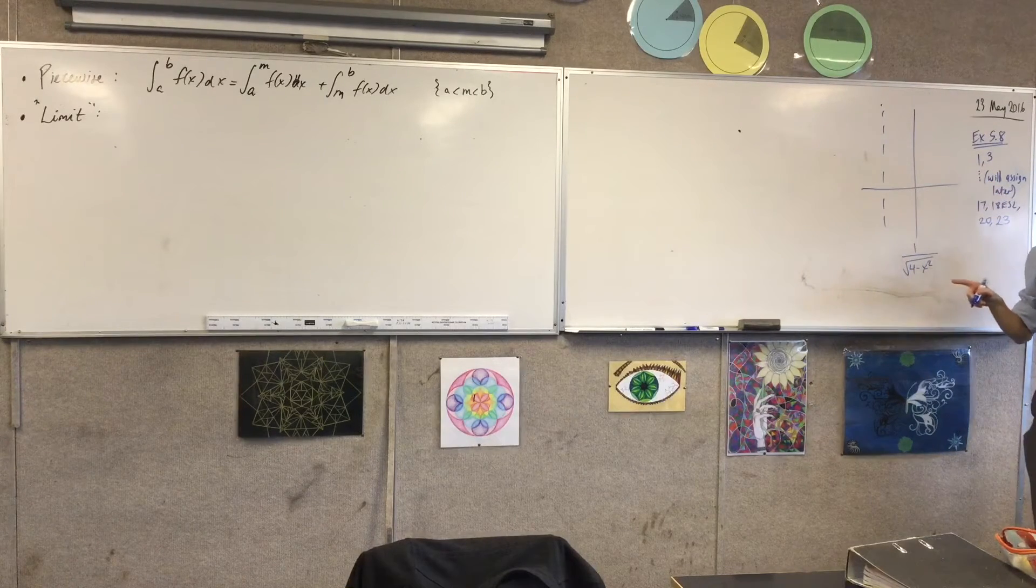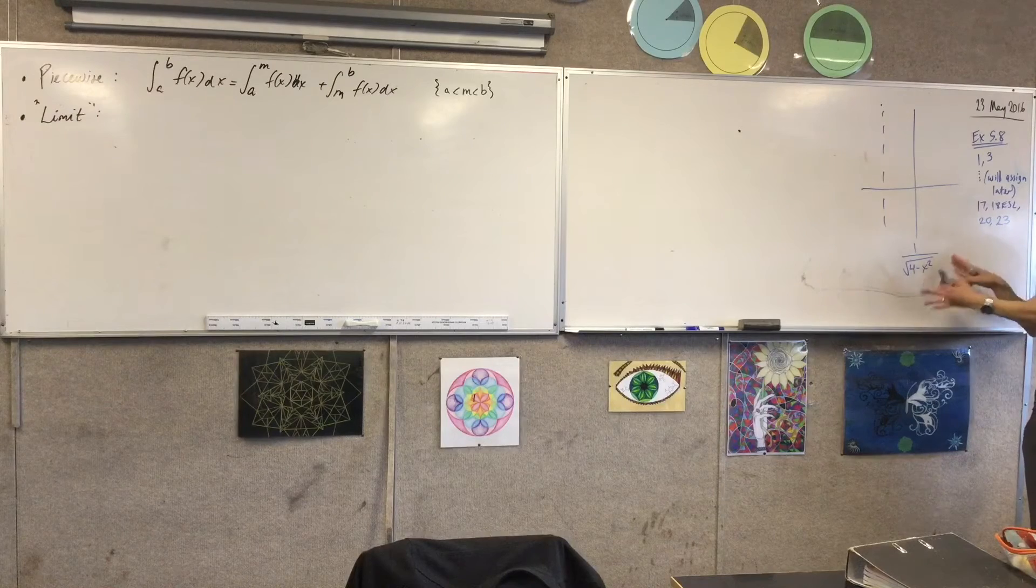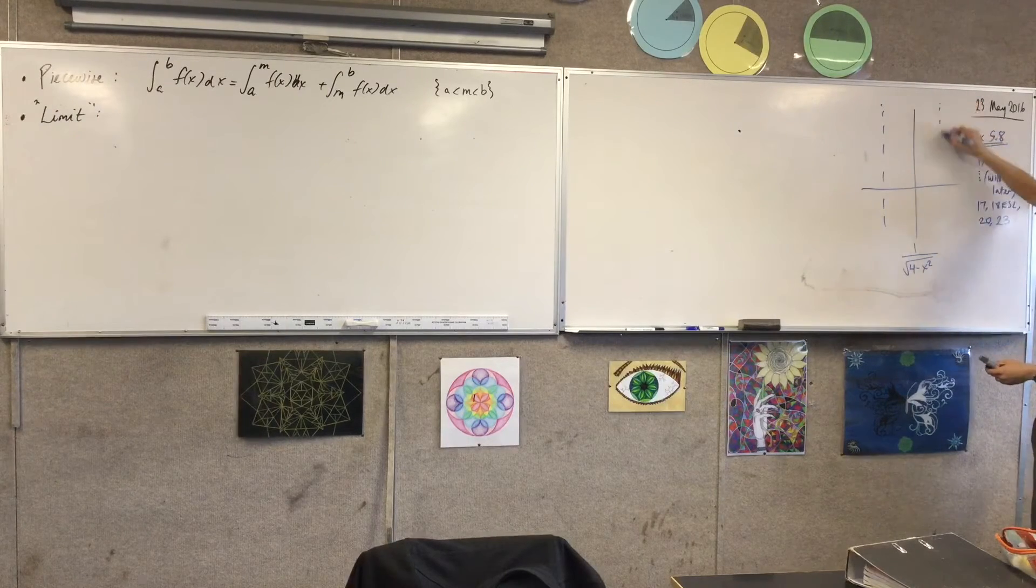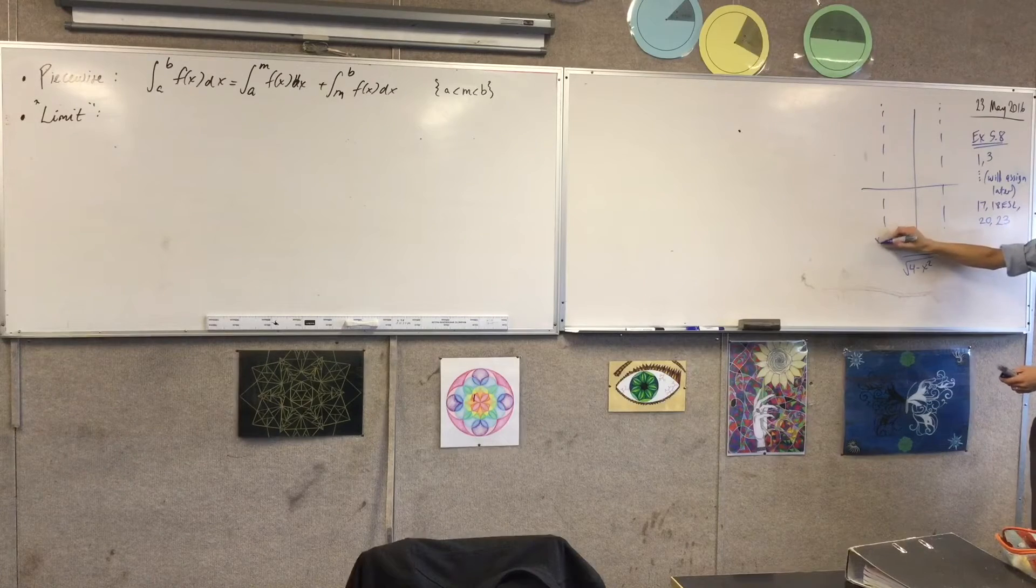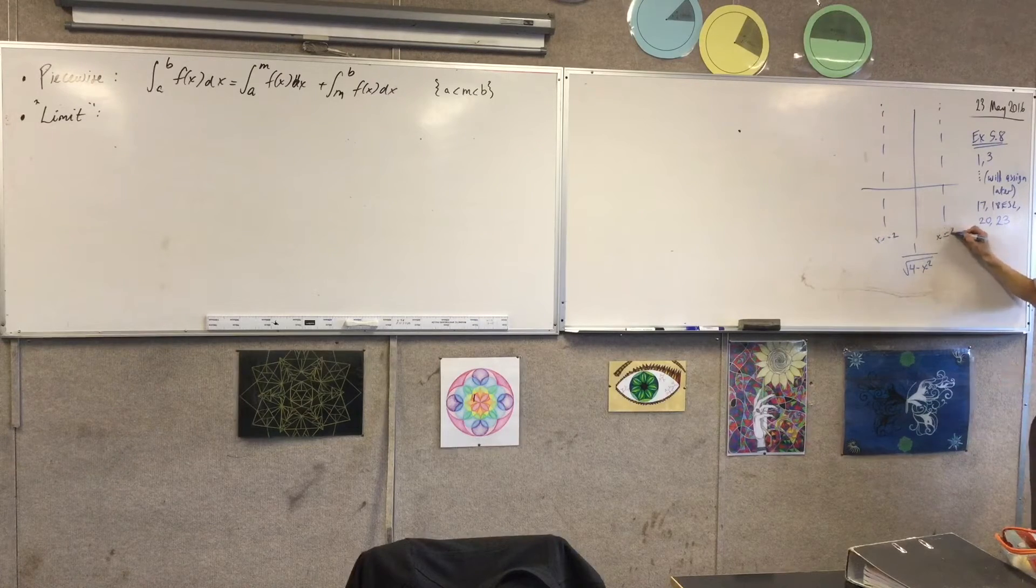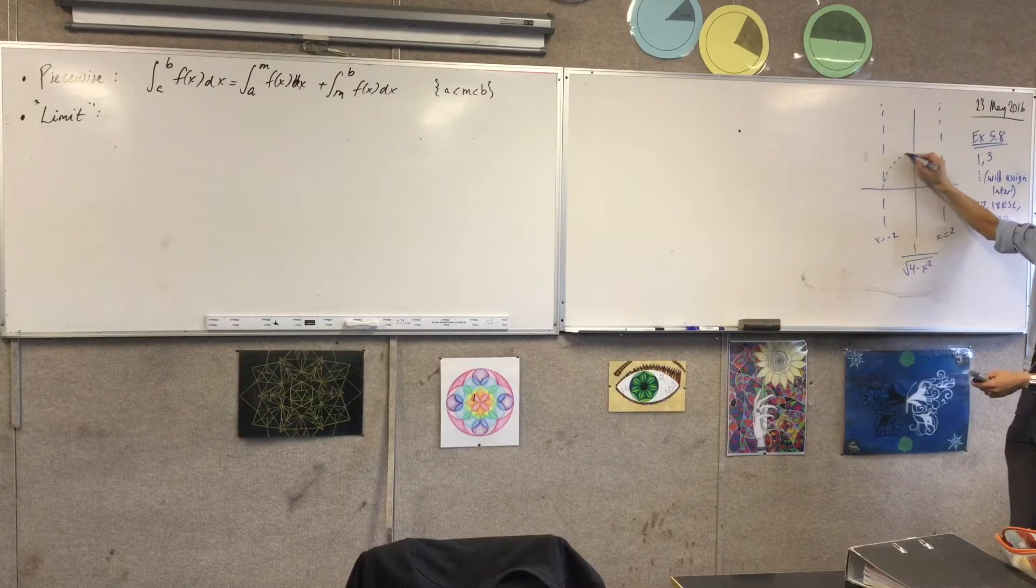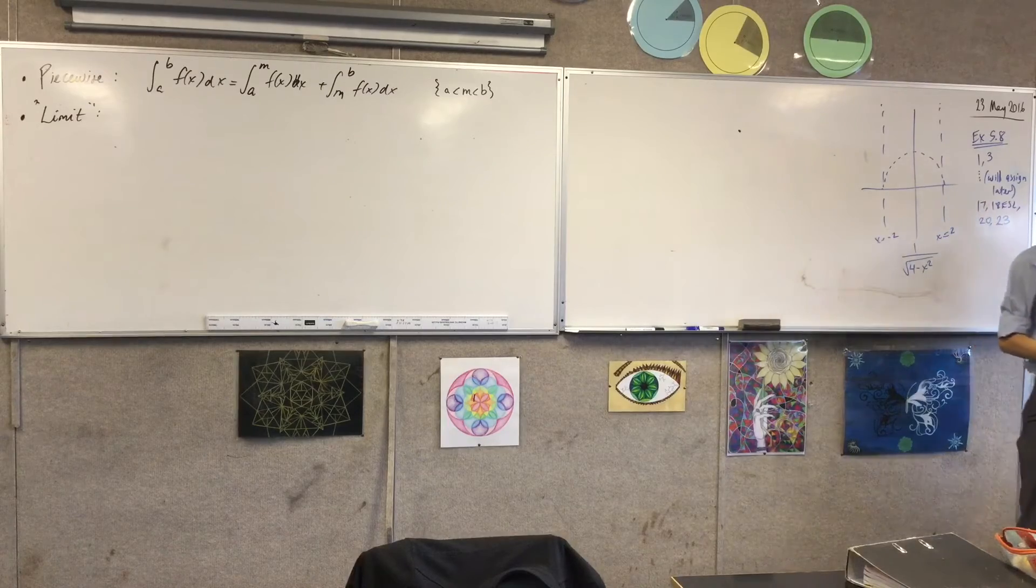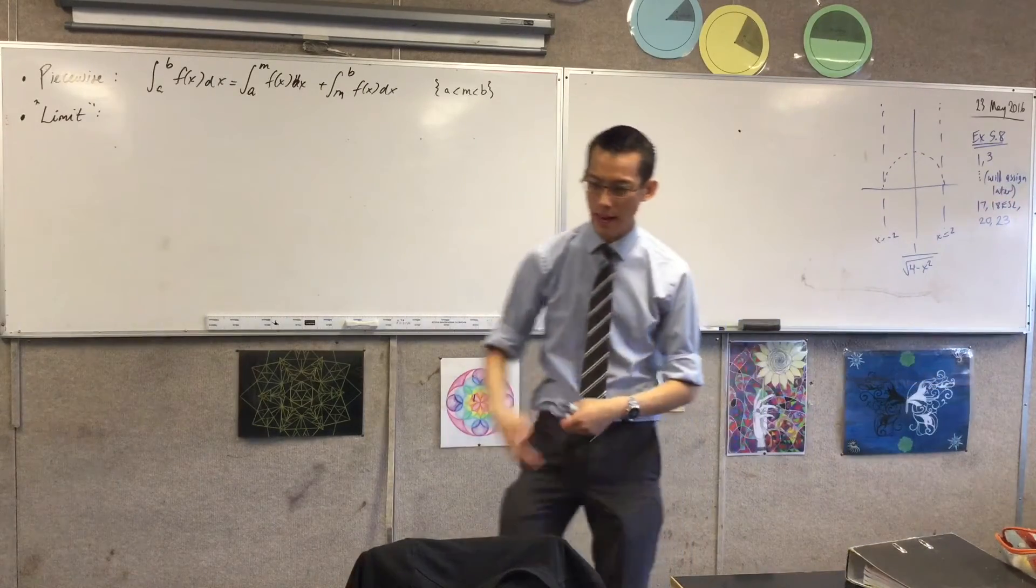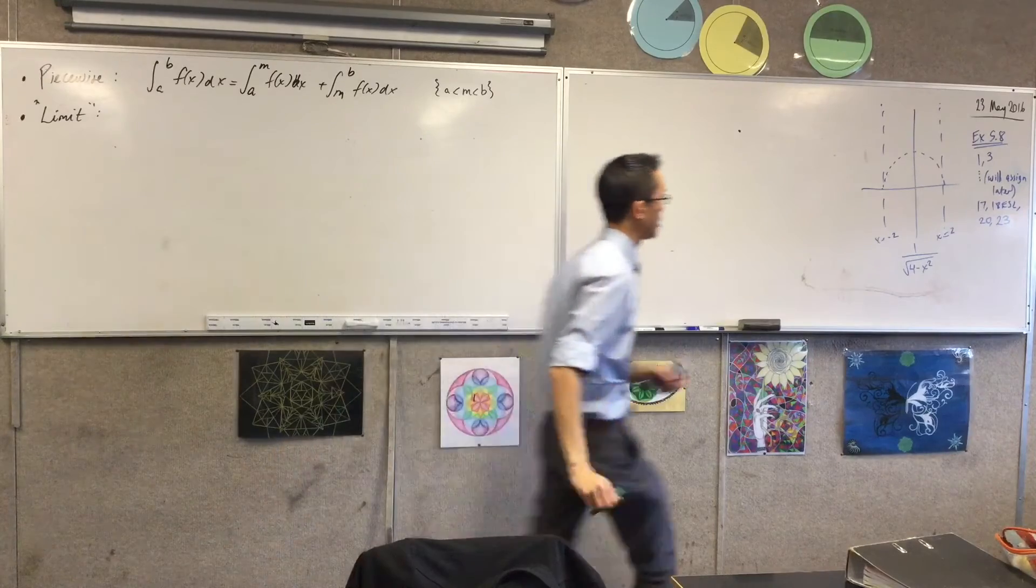And so what this thing looks like is, well, the square root of 4 minus x squared, that's what shape, the denominator? What shape is that? That's a semicircle, right? So if I've got x equals negative 2 and x equals 2, the semicircle looks like this. And then you're taking, we've seen this before, if you're doing the reciprocal function.